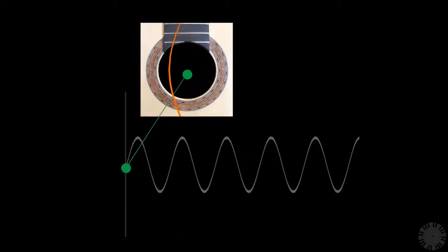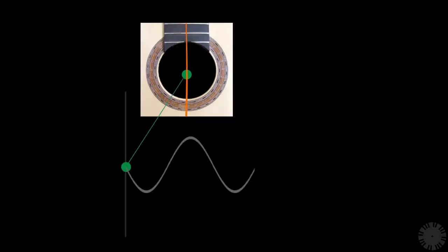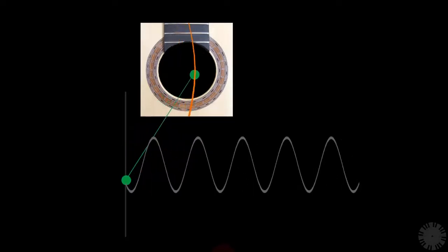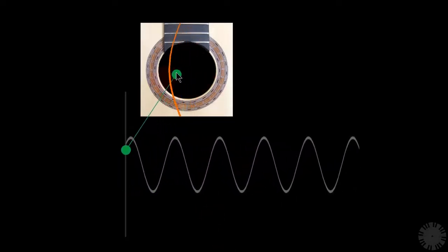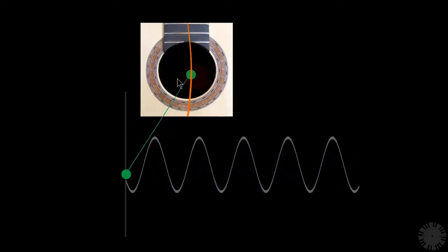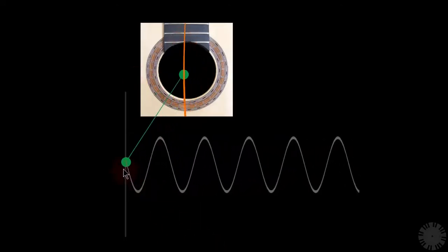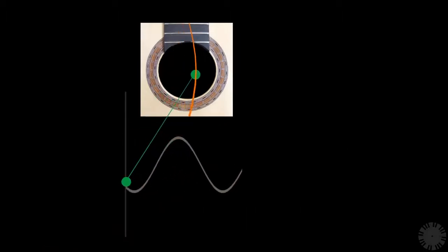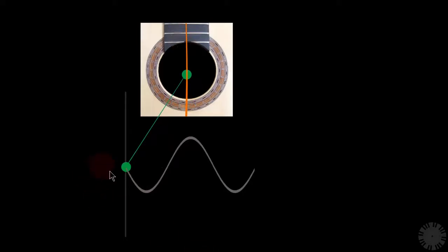When the string is vibrating rapidly, the peaks and troughs are forming rapidly. In other words, here there are fewer cycles in a given period of time. We usually measure these cycles in seconds, so we could say that per second there are fewer cycles in the first part.